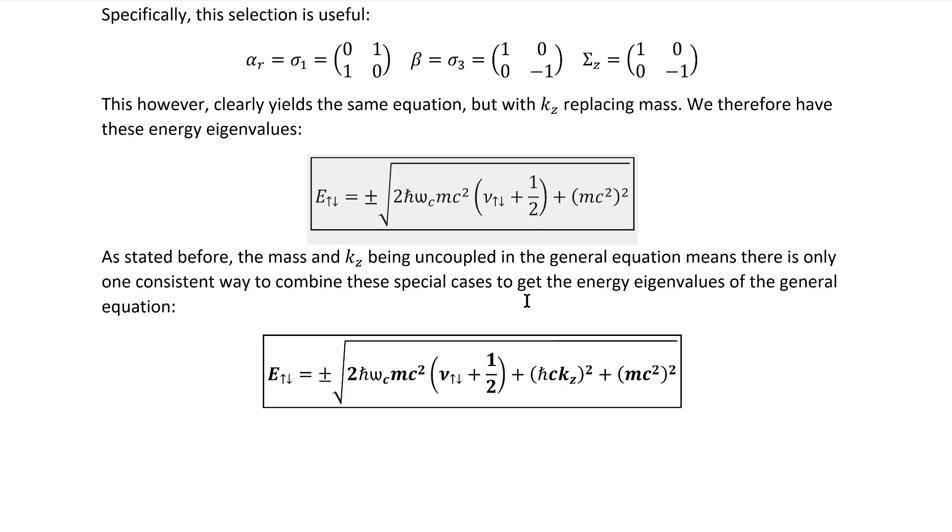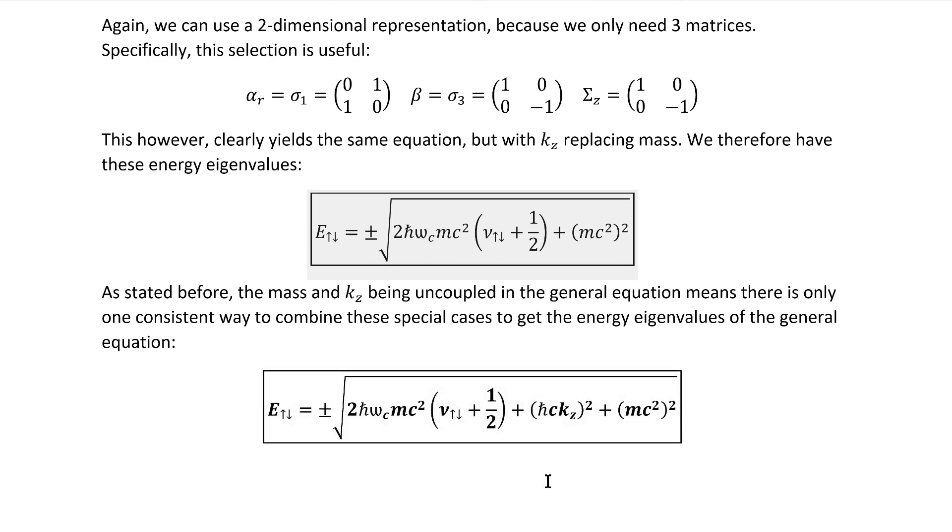As stated before, the mass and kz being uncoupled in the original equation means that there's only one consistent way to combine these special cases to get the energy eigenvalues of the general equation. Now, it has occurred to me that I ought to be more specific about uncoupled. I forgot to do that in my Cartesian coordinates video. I hope it didn't confuse people too much. But if we look at the original equation, them being uncoupled is not just them appearing in separate terms. By uncoupled, I'm also referencing the fact that they multiply different alpha and beta matrices. If they multiplied the same one, their sum would appear under the same square, which is definitely not no coupling.